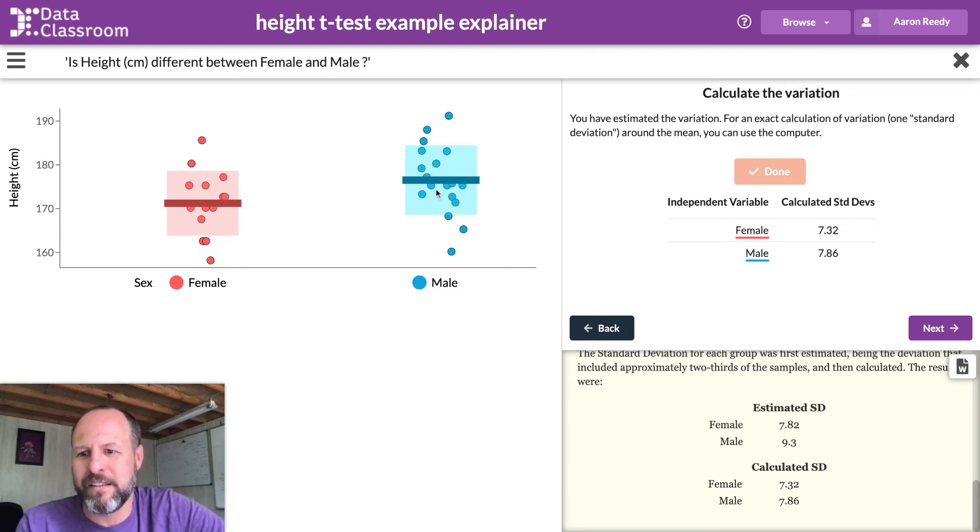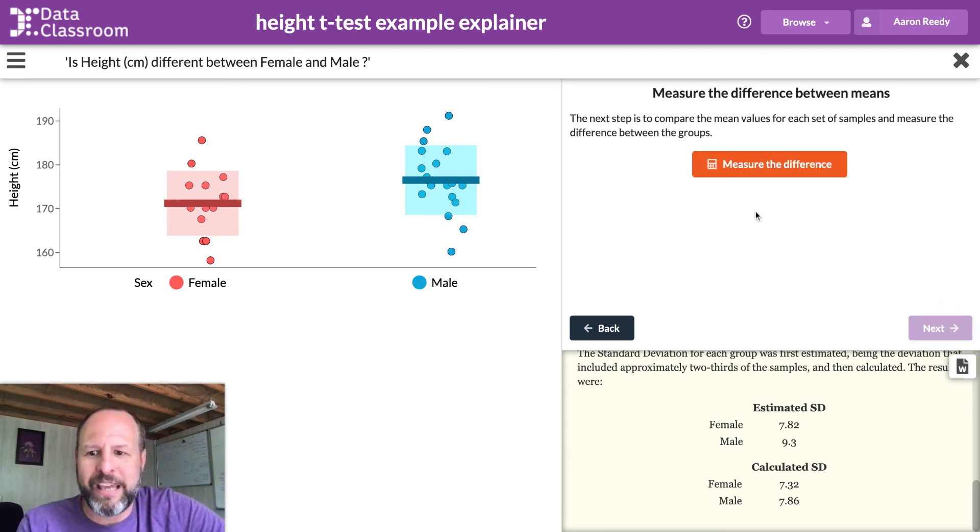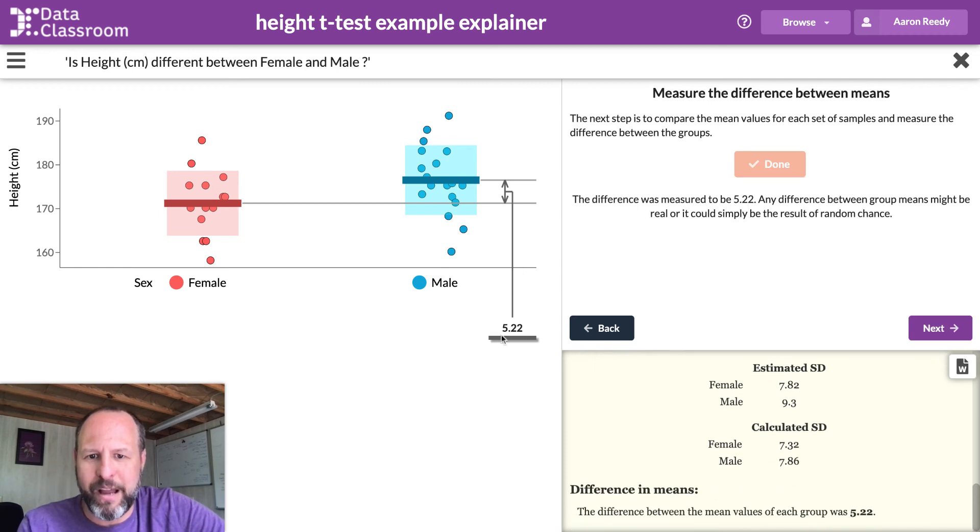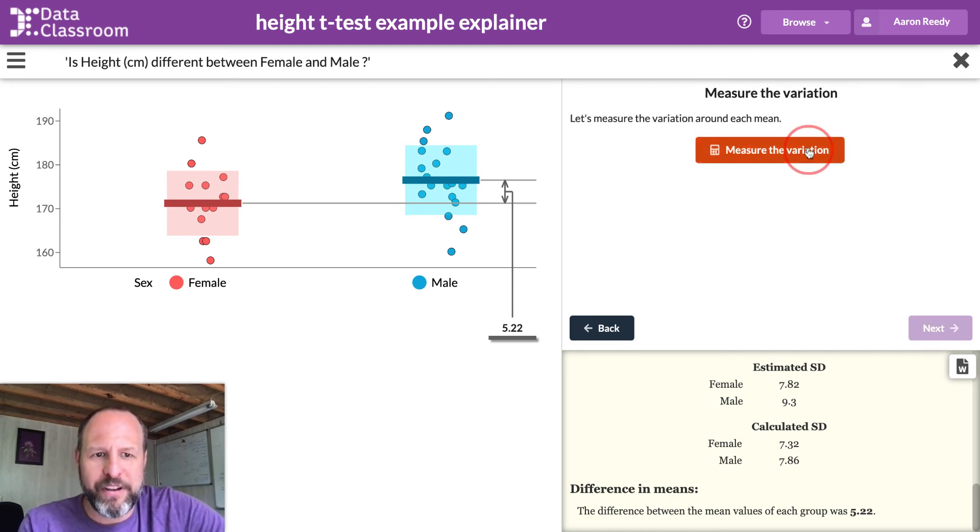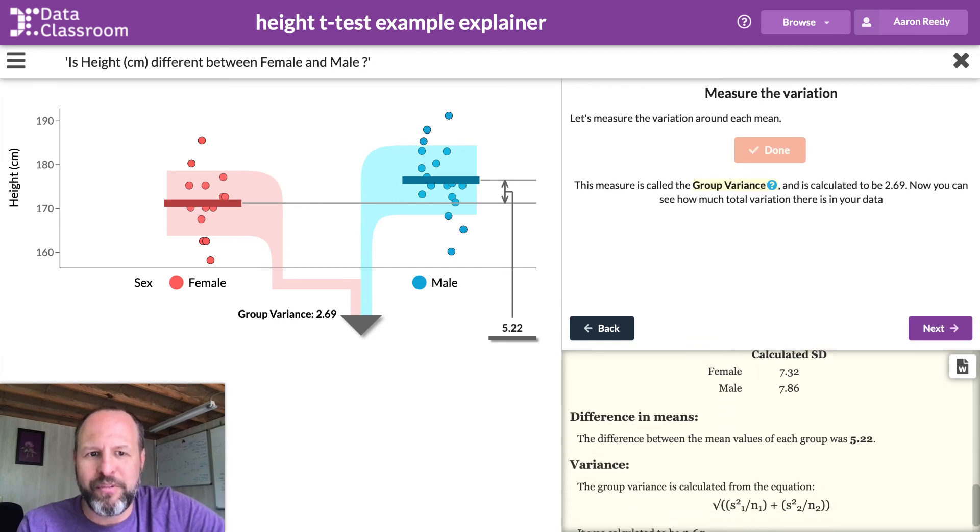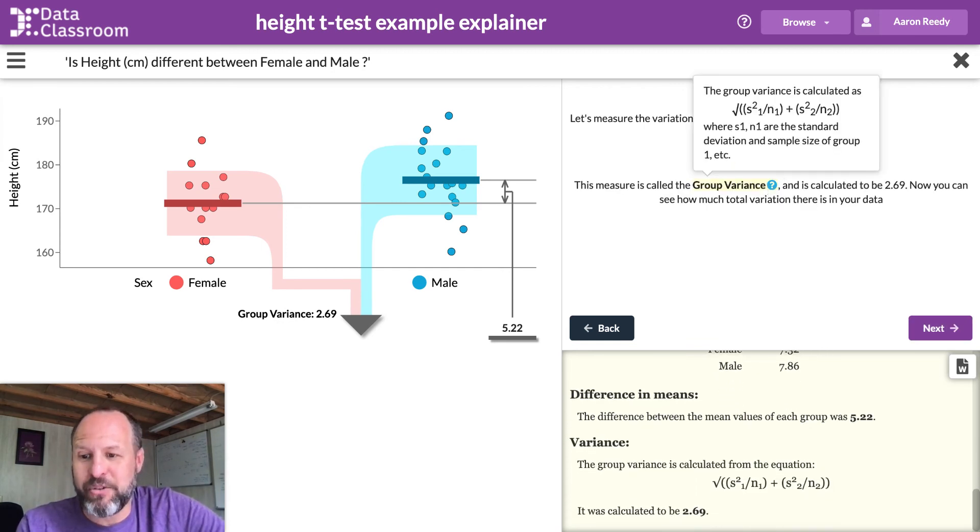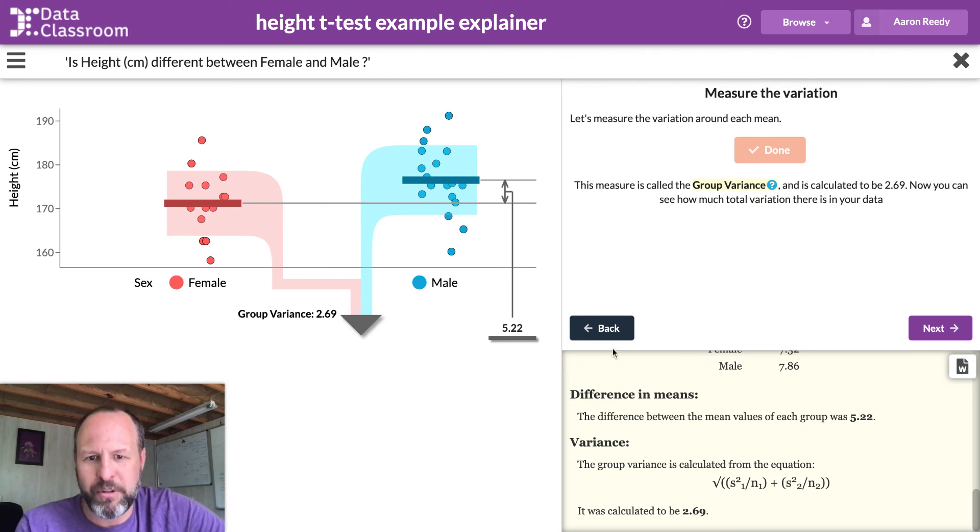And now we're looking at this data set in a different way. We're comparing these two groups, female and male, in terms of where the means are and the variation around that mean. So when we go on to actually calculate the test statistic and ultimately the p-value, everything's going to be tied to this animation. So here I'm going to measure the difference between means. We can see the mean height differs by 5.22 centimeters between males and females in this sample. And when we measure the variation, we're measuring this quantity called group variance. And again, there's an equation that drives this. But I think the important thing for a novice learner is to understand that the variation around the mean is what contributes to group variance. And so now we have 2.69 for our group variance.